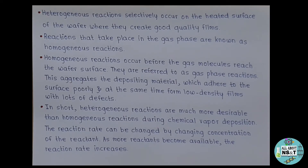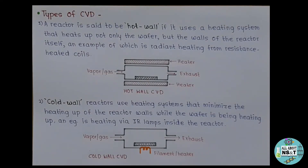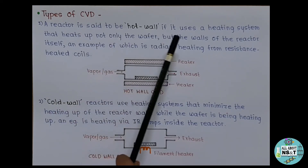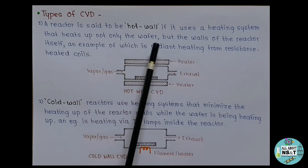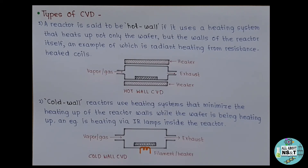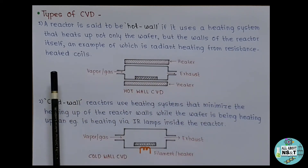There are a number of forms of CVD that are widely used, differing in how chemical reactions are initiated and in process conditions. A reactor is said to be hot wall if it heats up not only the wafer but the walls of the reactor itself — an example is radiant heating from resistance-heated coils. In hot wall reactors, films are deposited on the walls as well as on the substrate, requiring frequent wall cleaning.